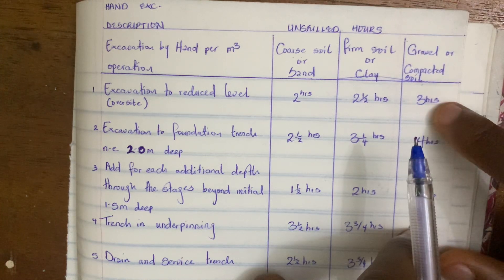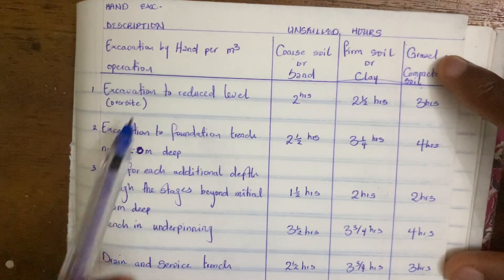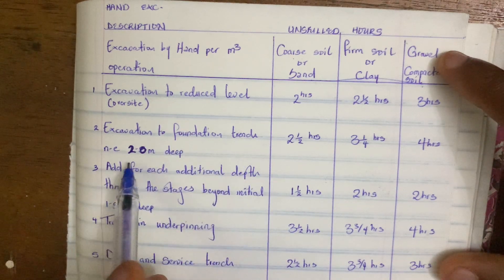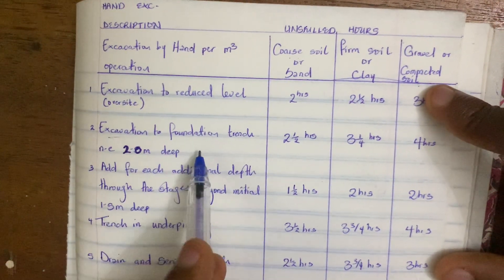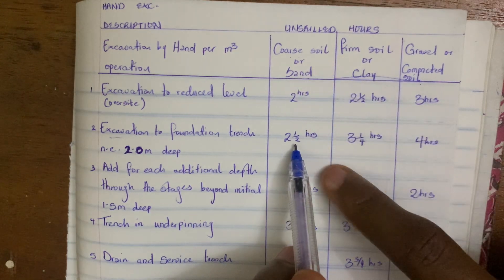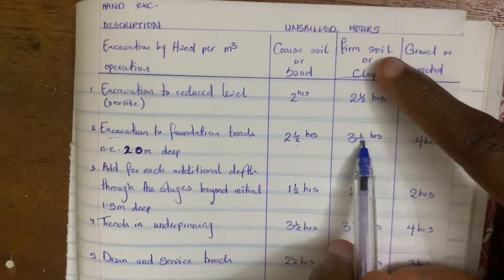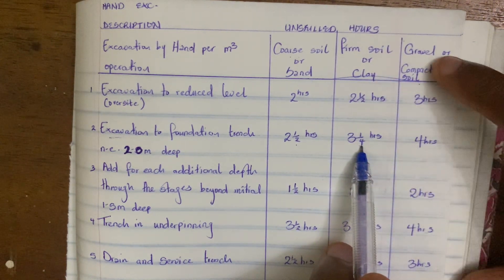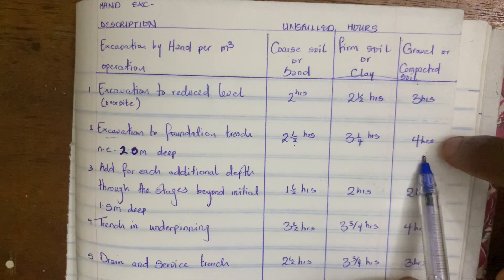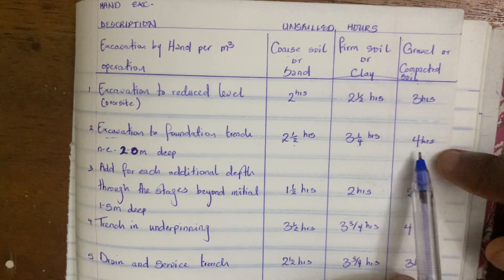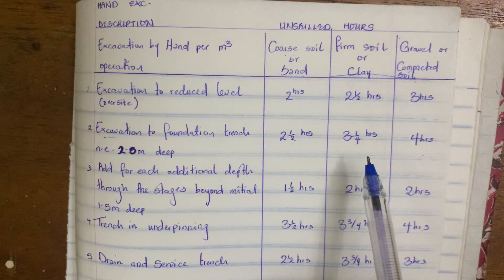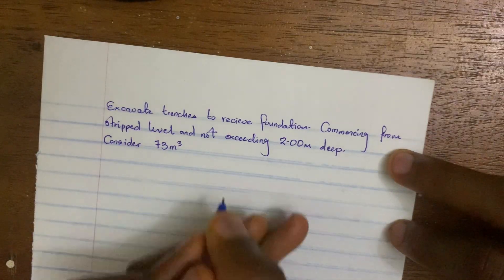I have brought out a table of labour constants. You can see: 'Excavation by hand per cubic metre.' The soil types listed are coarse soil or sand, firm soil or clay, and gravel or compacted soil. For our operation — 'Excavation to foundation trench, not exceeding two metres deep' — in coarse/sand soil it takes 2.5 hours per m³, in firm/clay soil it takes 3¾ hours per m³, and in gravel/compacted soil it takes 4 hours per m³. We are going to assume a firm soil or clay, so we will use 3¾ hours.